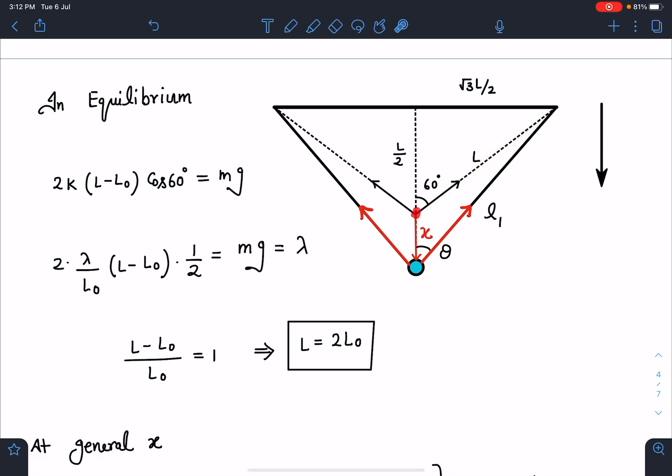Now we are displacing this particle by a distance of x, so we have to approximate this. Normally what we do in these problems, we drop a perpendicular here and we take this as extension, we take this as x cos θ, and we write F restoring as 2kx cos²θ. By that logic the answer was not matching, so I have to approximate this problem to a greater extent.